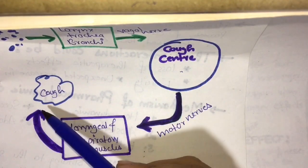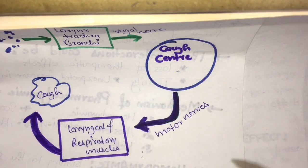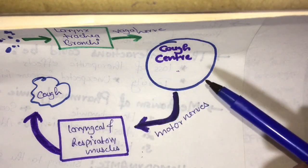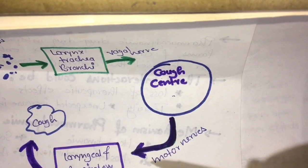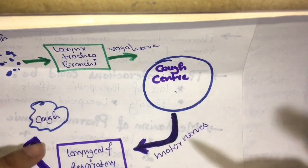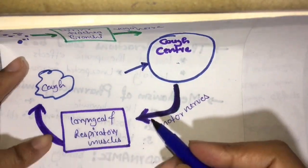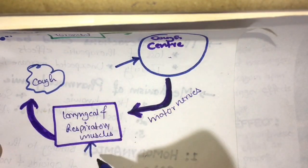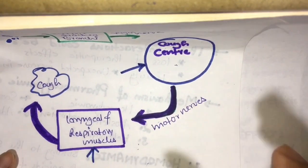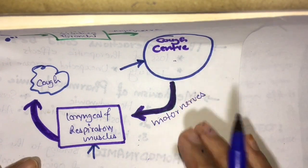The cough is produced at the vagal nerve level through stimulation of the mucous membrane and periciliary layer. Antitussives work in two ways: first, they act on the central nervous system; second, they act peripherally on the respiratory muscles. They reduce the cough but do not eliminate it completely from the body.